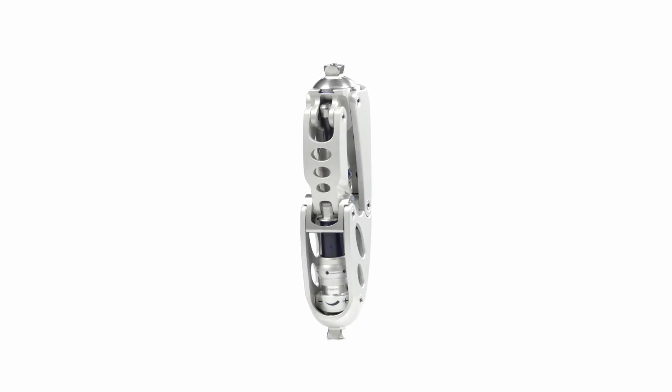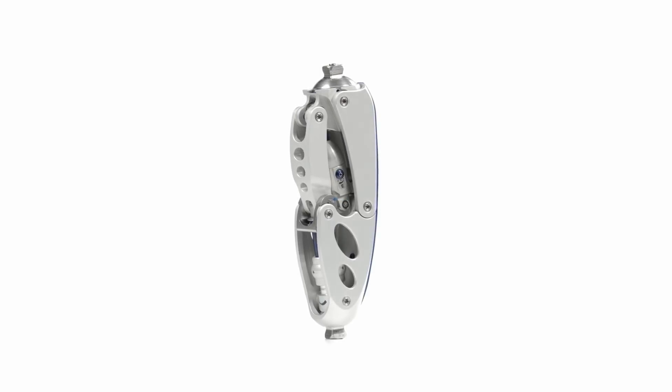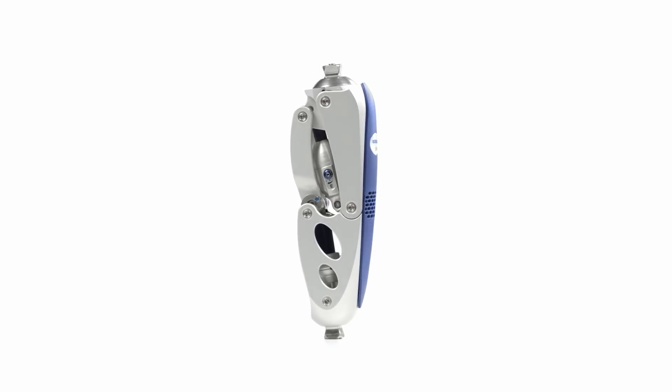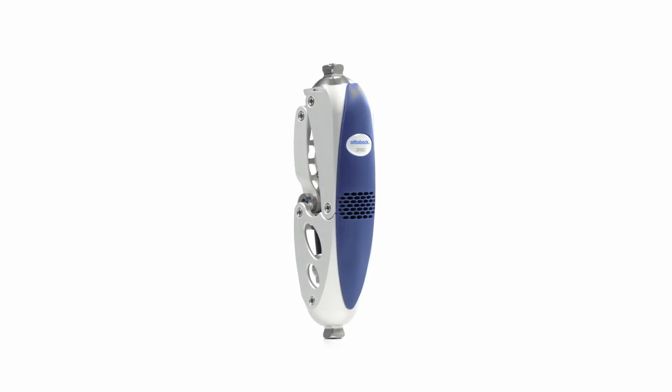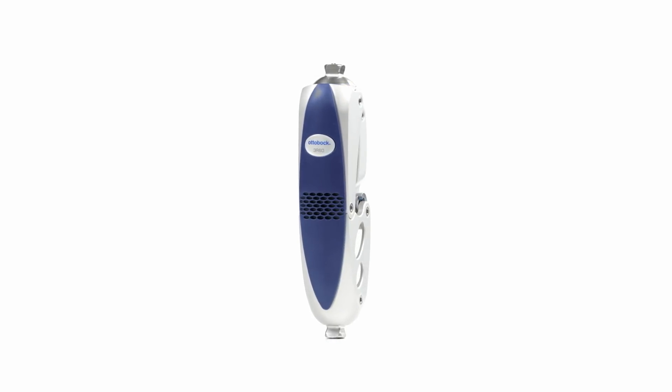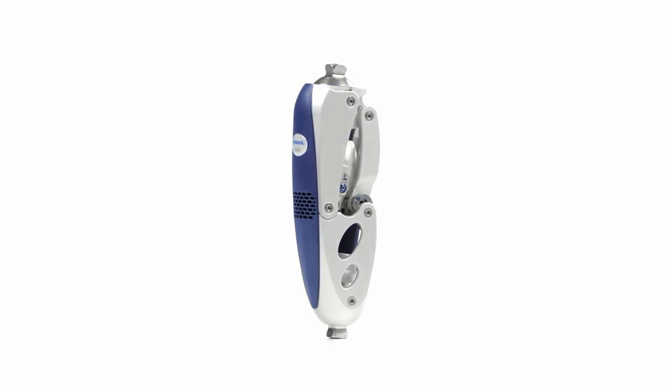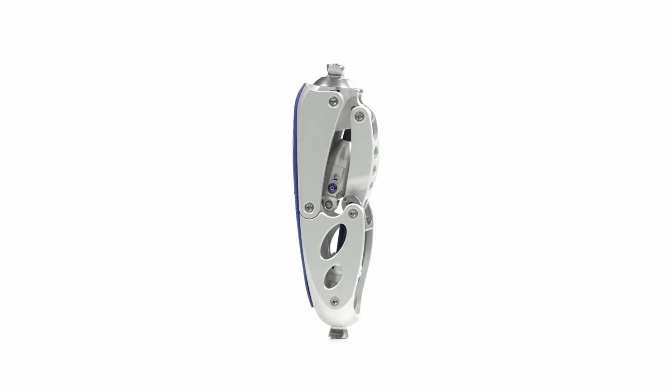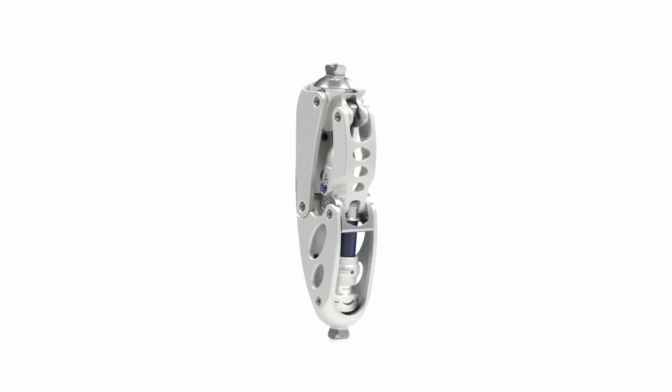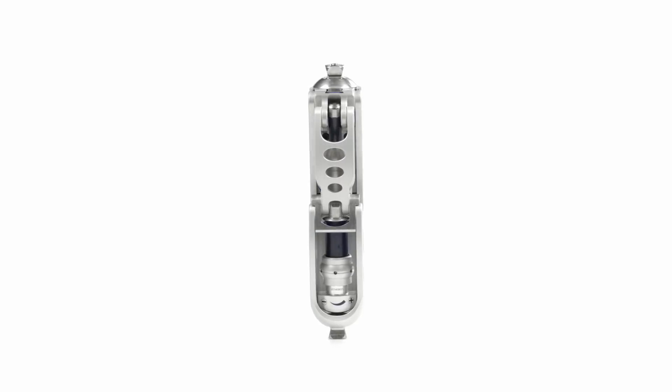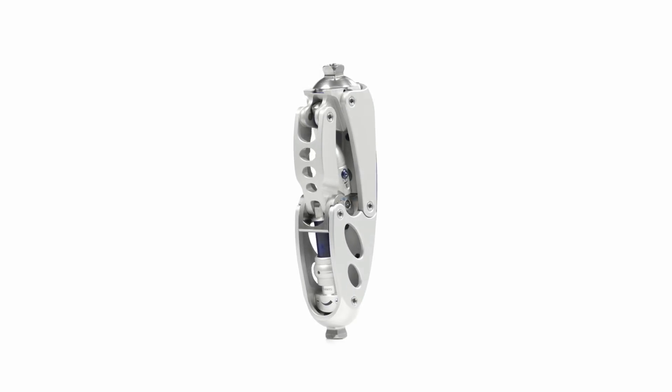The unique characteristic of the 3R60 is its ergonomically balanced stride, EBS, which allows for a cushioned stance flexion of up to 15 degrees, taking place without initiating normal swing flexion. This stance phase flexion creates shock absorbing comfort at heel strike as well as additional stability for the user.